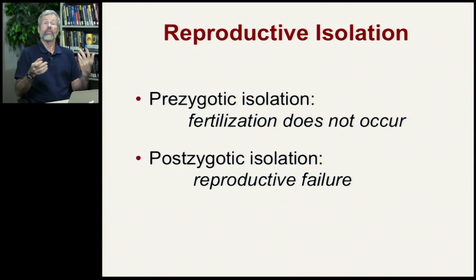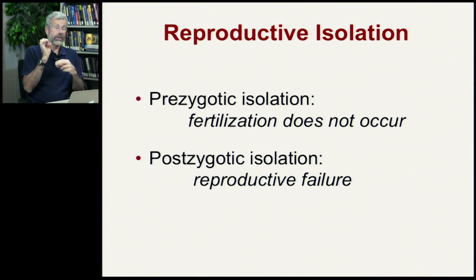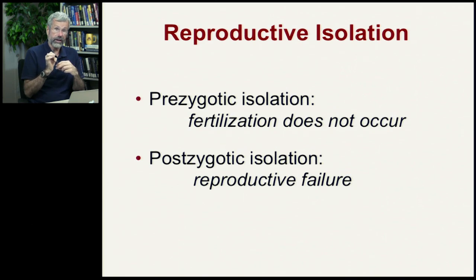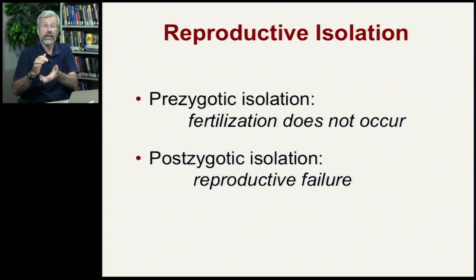Or, there might be sperm from one species that fertilizes the egg from another, but the resultant zygote does not survive. That's reproductive failure, meaning there's no mixture in the next generation.